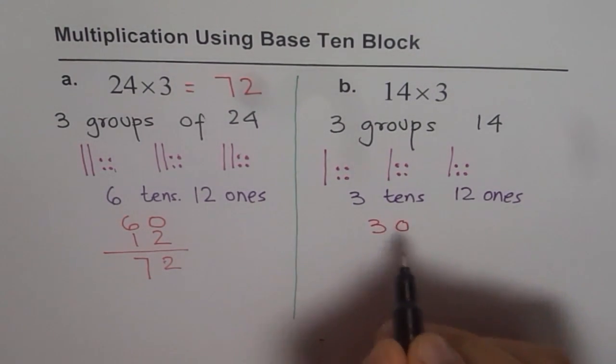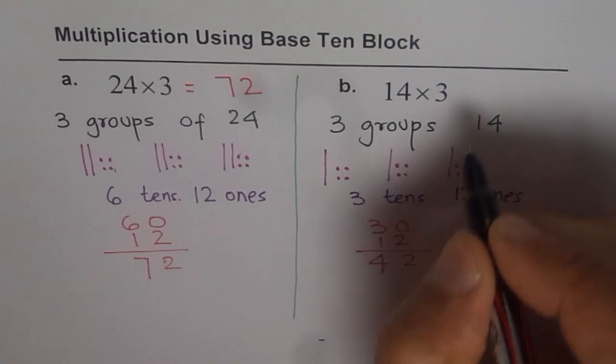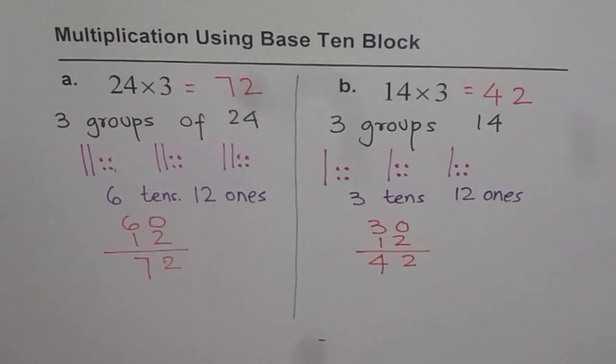Let's write and figure out how much do we get. 3 tens is like 30, right? And 12 ones is just the number 12. When you add, you get 42. That's what you get. 42 is our answer.